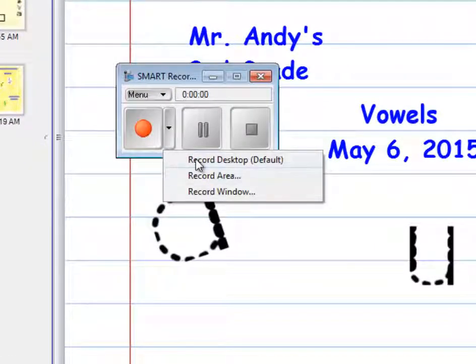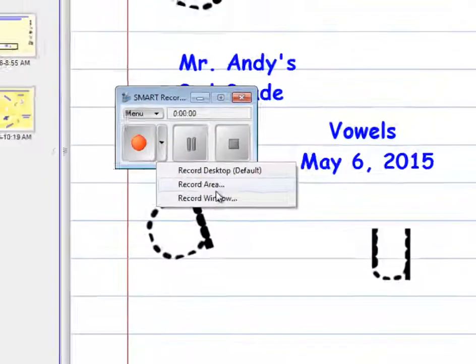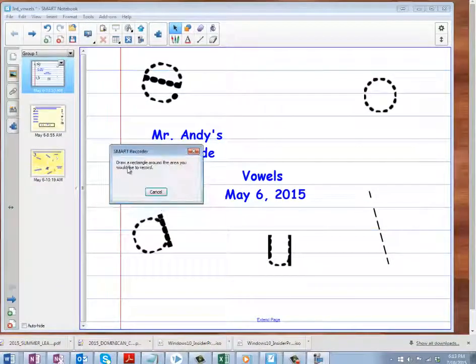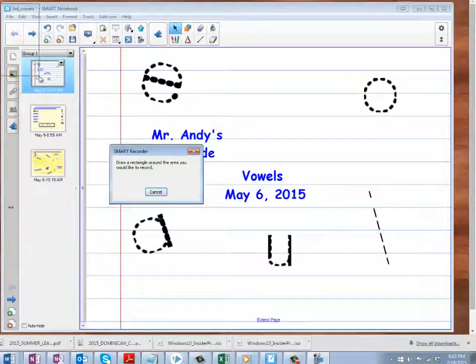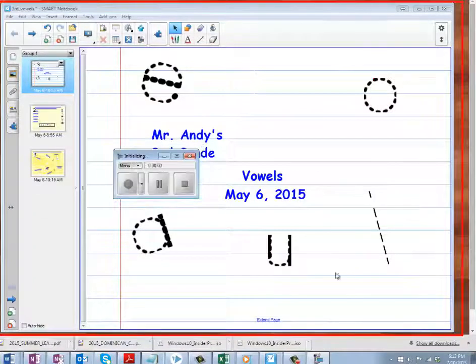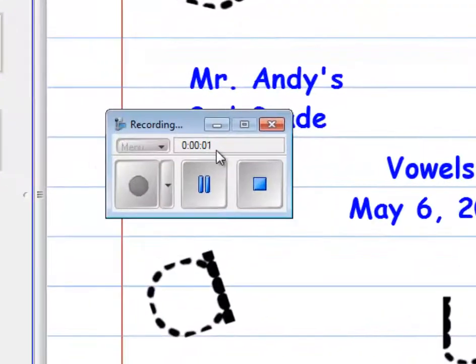You can now record your desktop, which is the whole entire screen. You can record an area as well by drawing a rectangle like so, and then you can complete your recording. If you see right now, it's now recording.